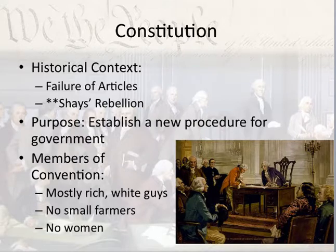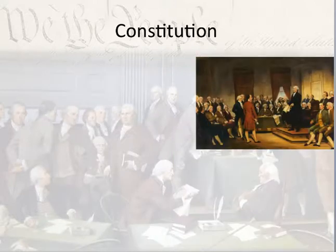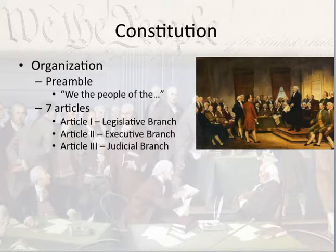Members of the Convention — this is important to keep in mind so you know where the American government came from. Well, it came from a bunch of rich white men. No small farmers invited, no women invited, no minorities invited. That gives you a snapshot of America and the Constitution under which we live right now. The Constitution is organized like this: a preamble, much like the Declaration of Independence. However, this preamble starts, "We the people of the United States," because they are establishing a government for the United States, which is now a thing.